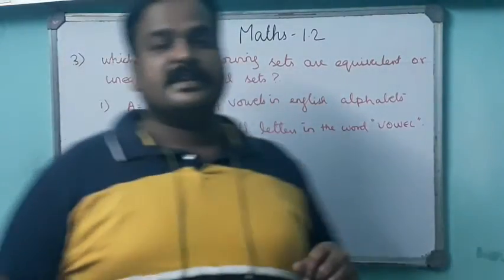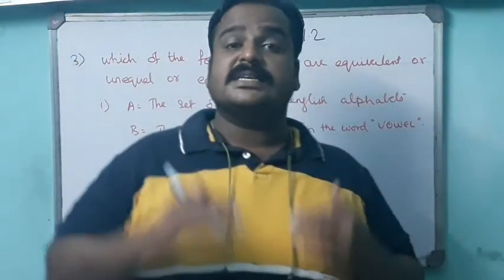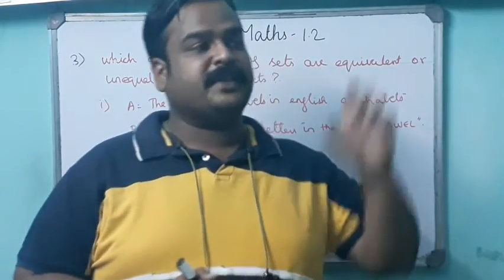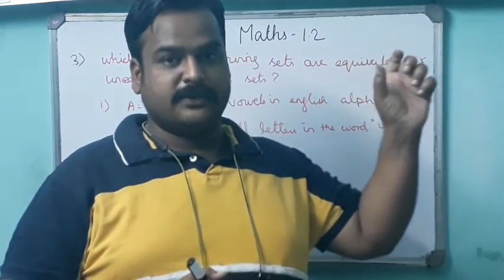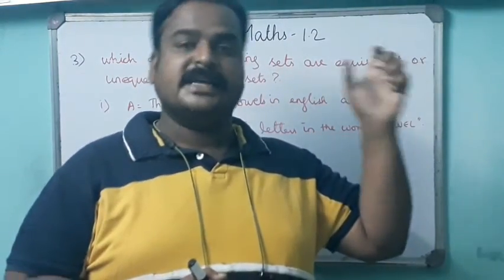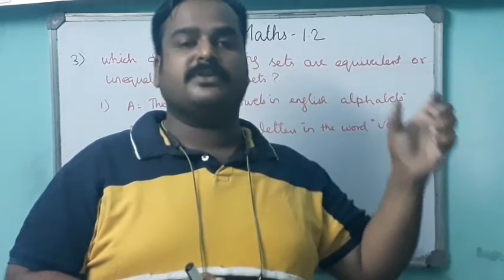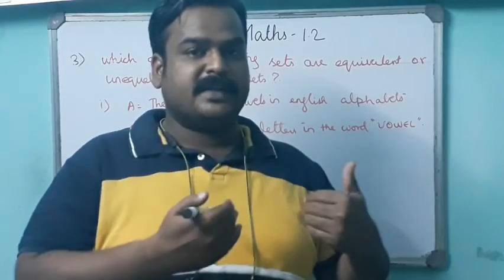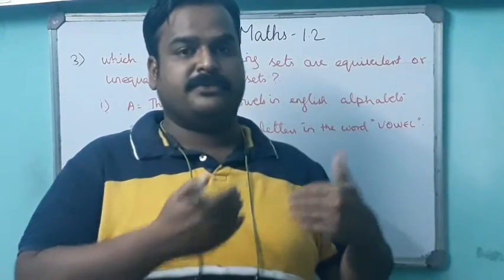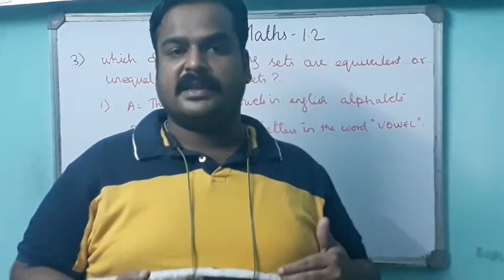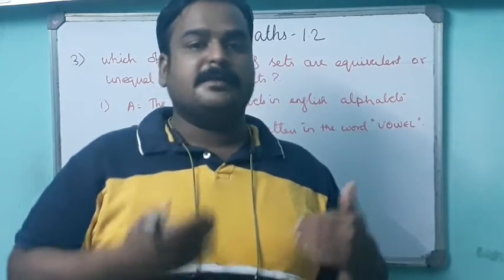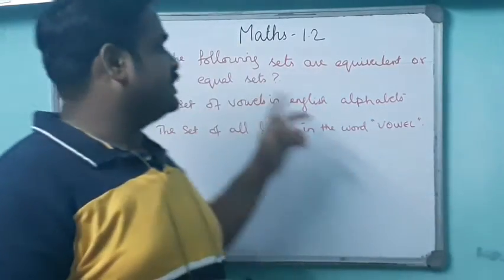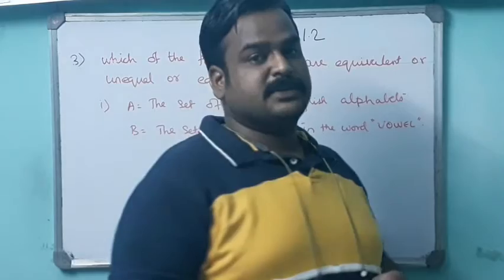Equal sets have the same number of elements. For example, set A is {1, 2, 3, 4, 5} and set B is {1, 2, 3, 4, 5} — maybe the order is different, like {5, 4, 2, 3, 1} — that is the same number of elements. Same elements and same number of elements means equal sets.